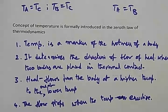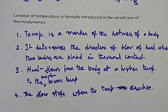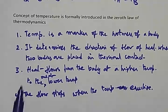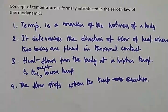To summarize: temperature is a marker of the hotness of a body — it gives a scientific value so we can compare. It determines the direction of flow of heat when two bodies are in thermal contact, since heat flows from the higher value to the lower value. The flow stops when the temperatures equalize.